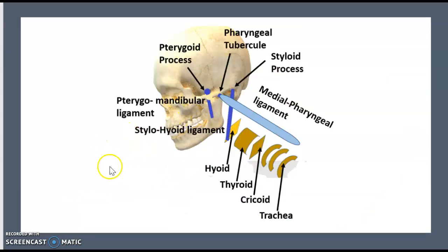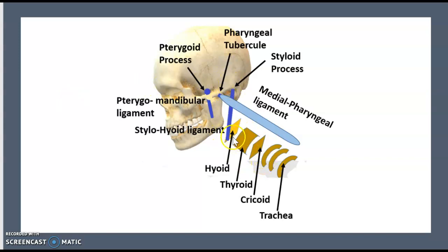To understand the topography of these muscles, we first need to learn about some landmarks. The larynx includes the hyoid bone, thyroid cartilage, and cricoid cartilage. The zygomatic arc includes the styloid process, pharyngeal tubercle, and pterygoid process.